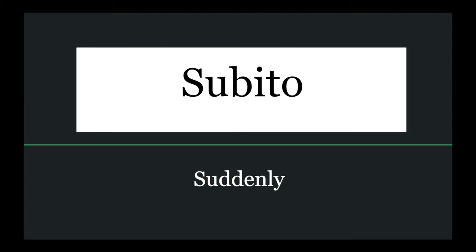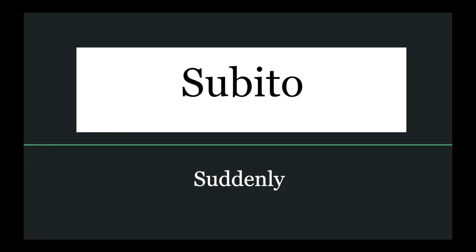The final word we are going to talk about is not specifically a dynamic marking, but is often found with dynamic markings in music. That word is subito, sometimes abbreviated as SUB. This means suddenly. Your music may have you performing at a forte dynamic when you come across sub-P, which would mean suddenly soft. Remember, this would not be the same as a decrescendo, where you gradually get softer over time, but subito would be instantaneous. Dynamic markings allow us to be a more expressive performer and convey meaning to our audiences.